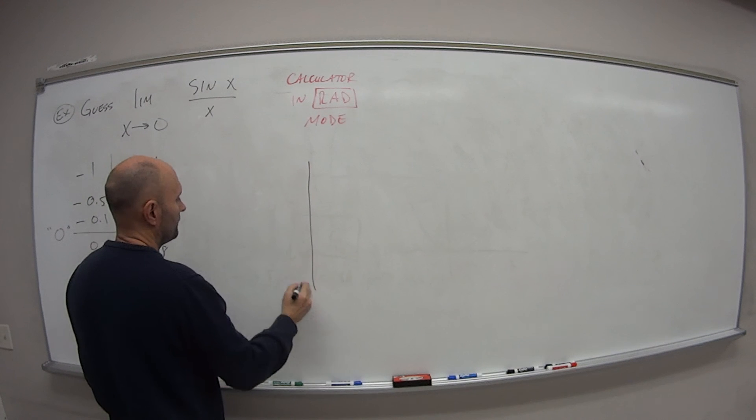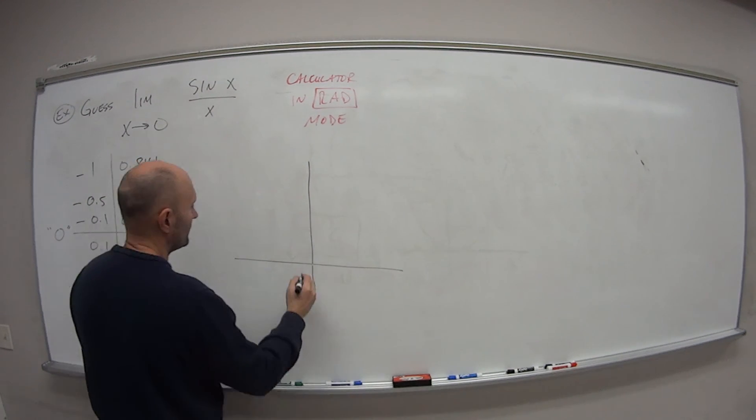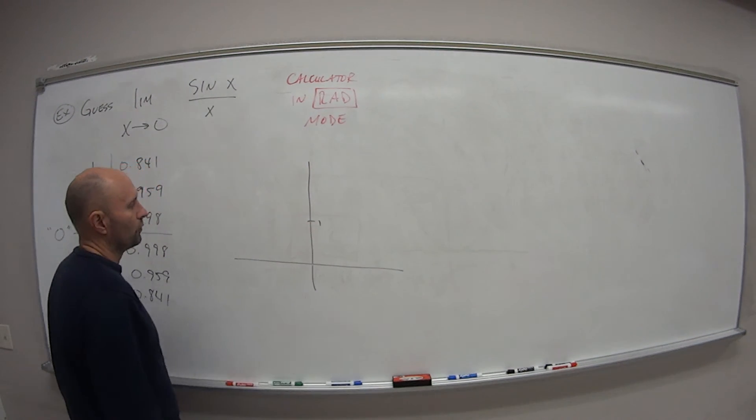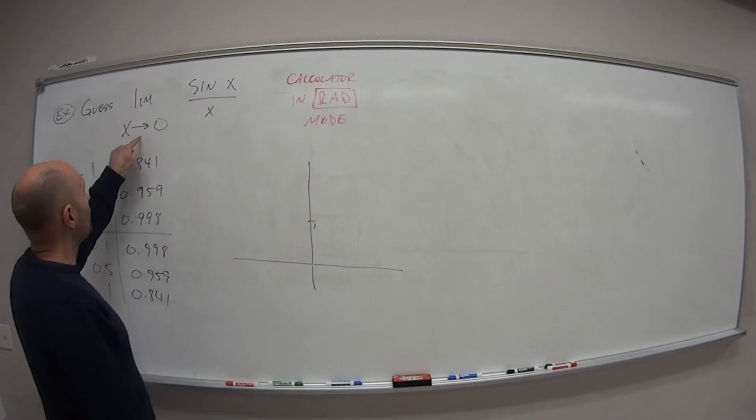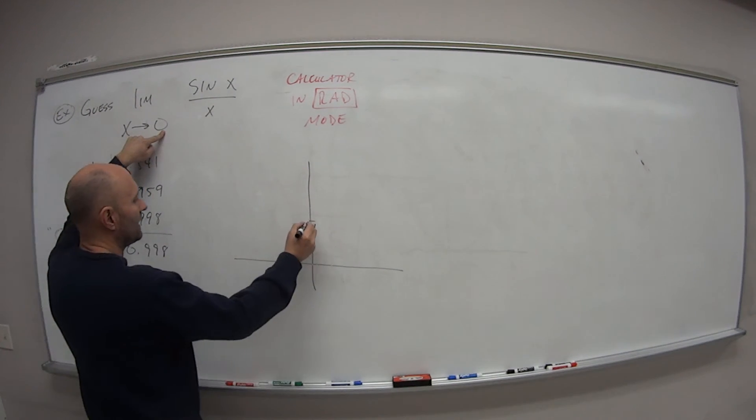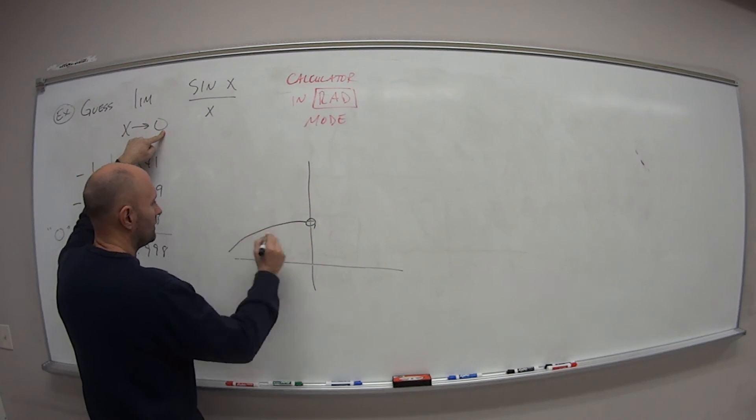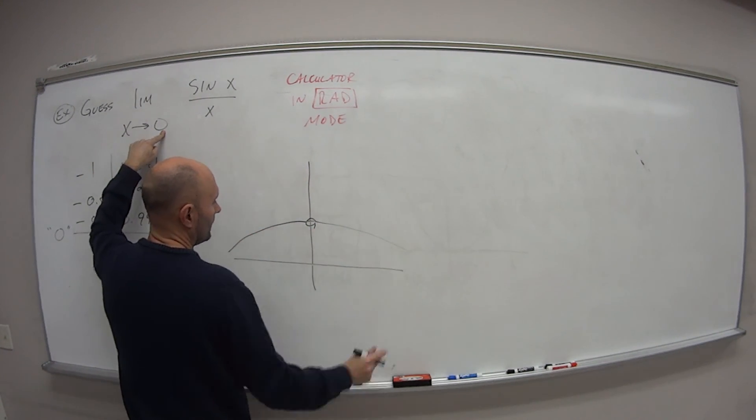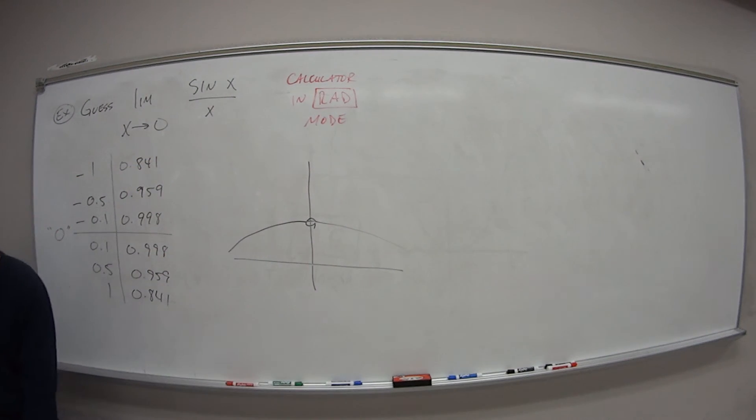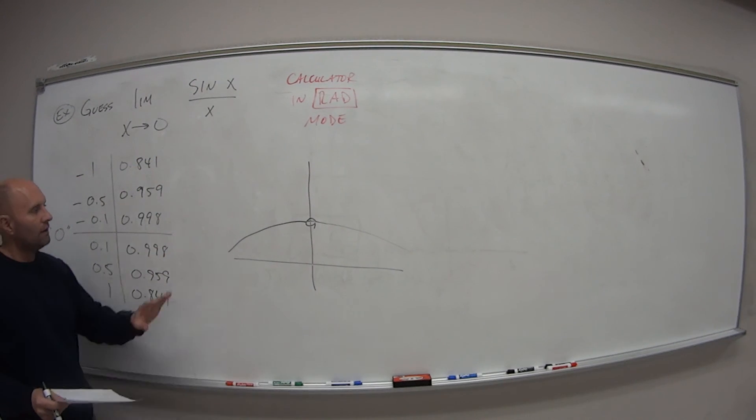And if we were to graph this, so if this is our value for 1 here, well, we know that there's no domain at 1. So that's our open circle. And this guy basically kind of looks like an umbrella branching off to both sides. So that's the graph.